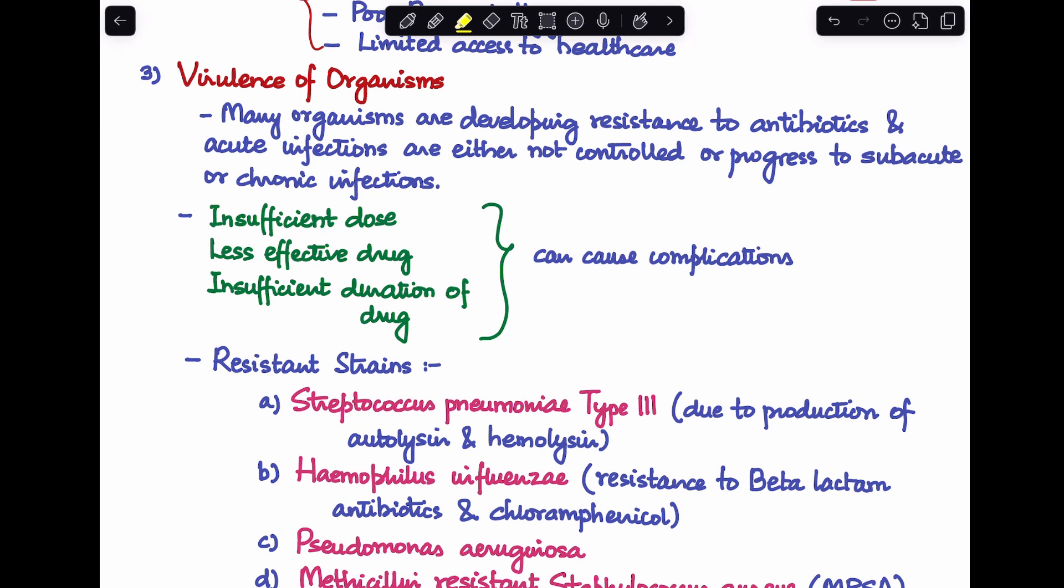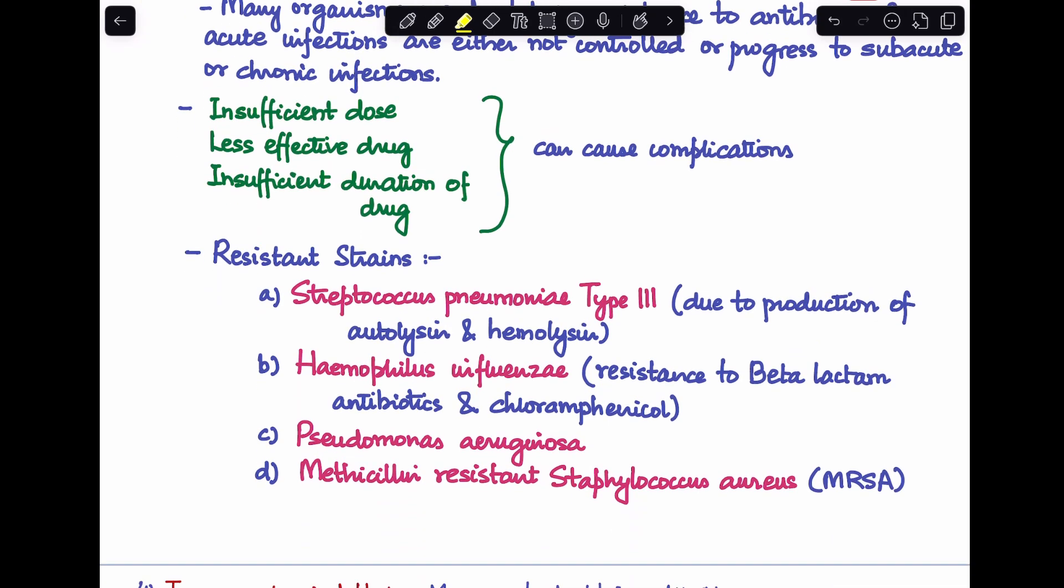Now what are the primary causes for this? First of all is when insufficient dose of antibiotic has been given, whether it is in terms of dosage, duration, or frequency. Second, when there is a less effective drug being given to the patient. And thirdly is an insufficient duration of drug, which I already mentioned. So these factors lead to the development of complications.